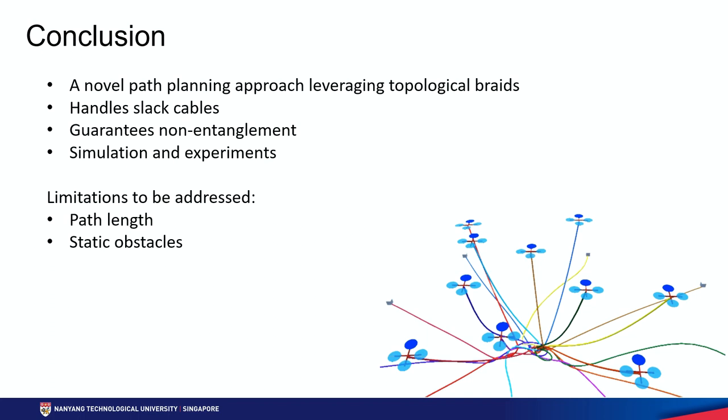To summarize, in this work we propose a novel path planning approach for multiple tethered robots leveraging topological braids. Our approach handles the slack cable model and guarantees non-entanglement, unlike existing works. Simulation and experiments are also carried out to verify the effectiveness of the approach. Our future work will address the issue of long path length of the existing approach and the lack of consideration for static obstacles. Thank you for listening.